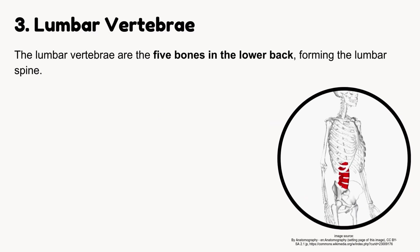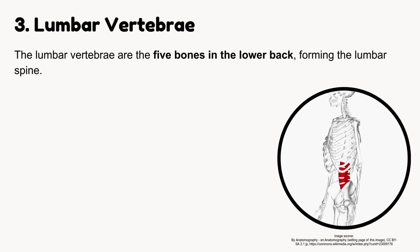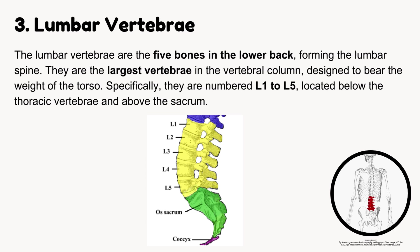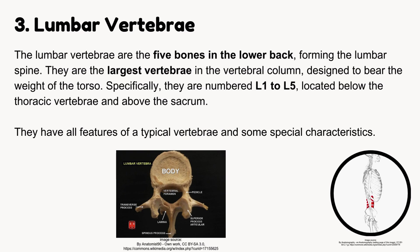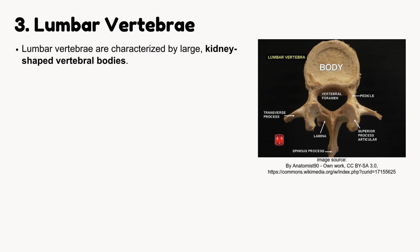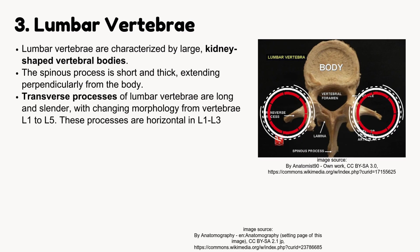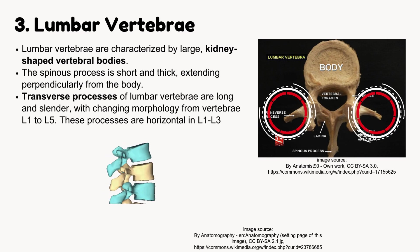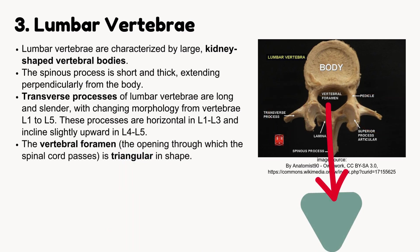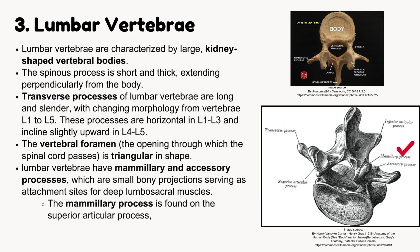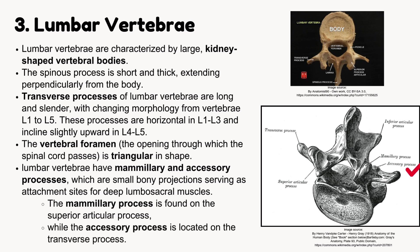Lumbar vertebrae. The lumbar vertebrae are the five bones in the lower back, numbered L1 to L5, forming the lumbar spine. They are the largest vertebrae in the vertebral column, designed to bear the weight of the torso, located below the thoracic vertebrae and above the sacrum. Lumbar vertebrae have large, kidney-shaped vertebral bodies. The spinous process is short and thick, extending perpendicularly from the body. Transverse processes are long and slender, horizontal in L1 to L3 and inclined slightly upward in L4 and L5. The vertebral foramen is triangular in shape. They also have mammillary and accessory processes — small bony projections serving as attachment sites for deep lumbar sacral muscles. The mammillary process is on the superior articular process, and the accessory process is on the transverse process.